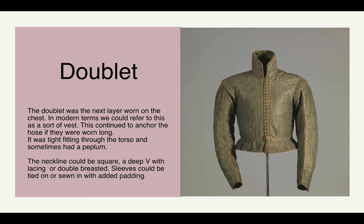The doublet is the next layer worn on the chest over the camicia — in modern terms, we would refer to it as a sort of vest. It continues to anchor the hose if they were worn long, and sometimes would have a peplum at the bottom at the waist. It was typically very tightly fitted using the same seaming discussed earlier. The neckline could be square, a deep V with lacing, or double-breasted. Sleeves could either be sewn on or tied on, and sometimes there was even padding added.